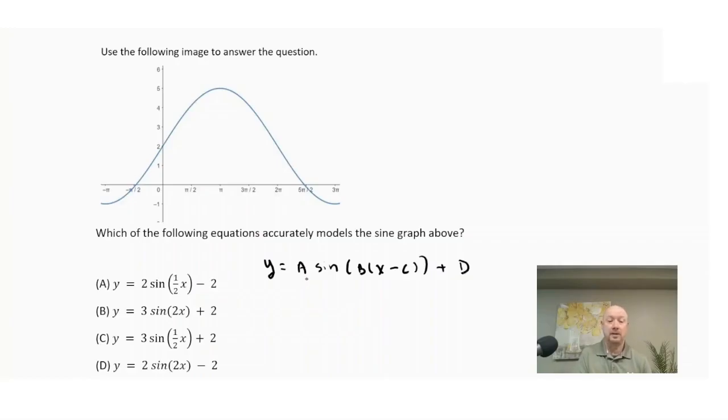So now the A represents the amplitude. So what we need to do for the amplitude is take the max value, which in this case here is five, and the min value is negative one. So we're going to say five minus negative one, all divided by two. So that comes out to be six divided by two or three. So the A value is three. So that means I can eliminate choice A and choice D because they have an amplitude of two.